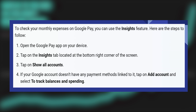If your Google account doesn't have any payment methods linked to it, tap on Add Account and select to track balances and spending. Reviewing your monthly expenses helps you understand where your money is going. It allows you to create and stick to a budget, ensuring that you allocate funds appropriately to various spending categories.